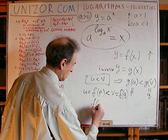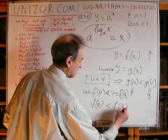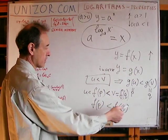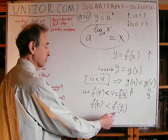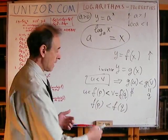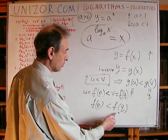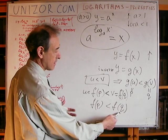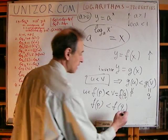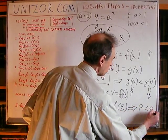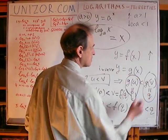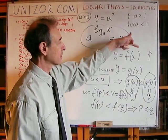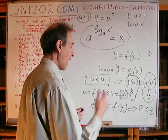Now, knowing that F(X) is monotonically increasing, what can be the relationship between P and Q? Can P equal Q? No, because then F(P) would equal F(Q). Can P be greater than Q? No, because since F(X) is monotonically increasing, if P is greater than Q, then F(P) would be greater than F(Q), which is not true. So the only thing we can say is P is less than Q — which is exactly what needed to be proved.